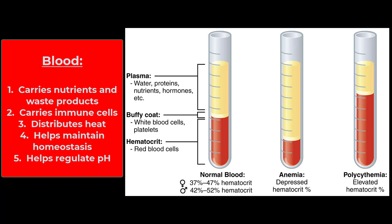It plays a huge role in the distribution of heat. That's because blood is warmer than the rest of your body, so your body uses blood and your skin like a radiator system to carry excess heat away or to trap heat at your core. It plays countless roles in the maintenance of homeostasis by carrying hormones and all sorts of chemical messengers that keep our body in balance. And lastly, it plays a big role in the maintenance of our body's pH.